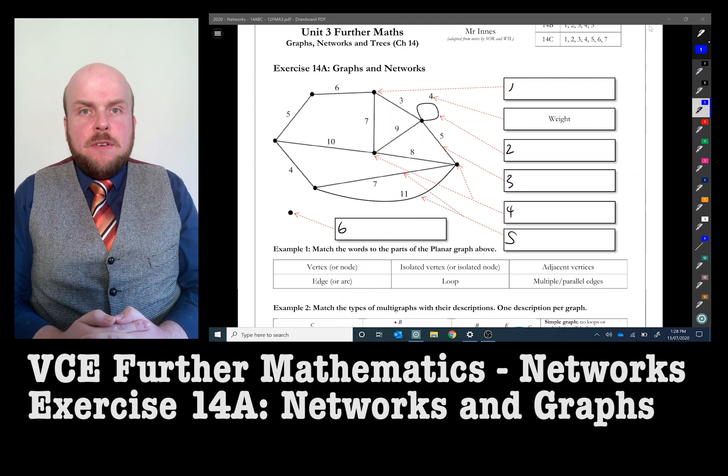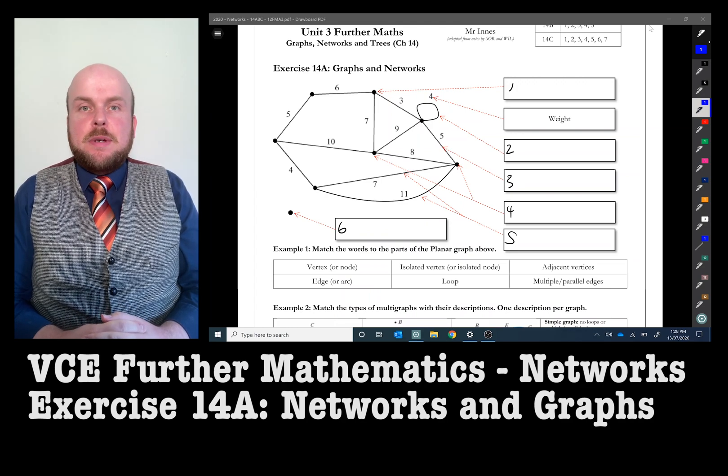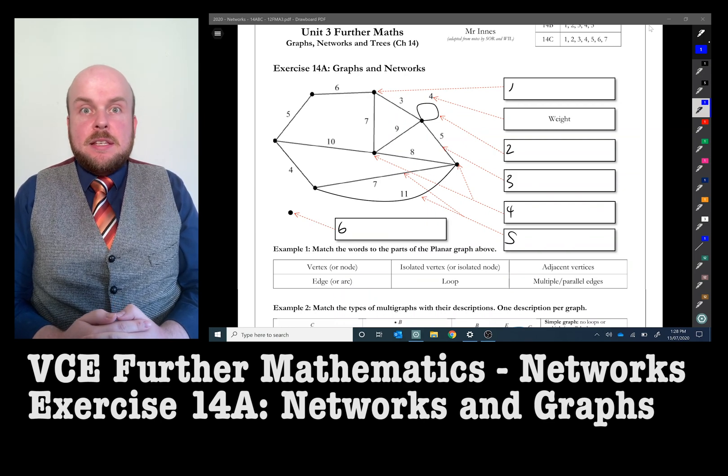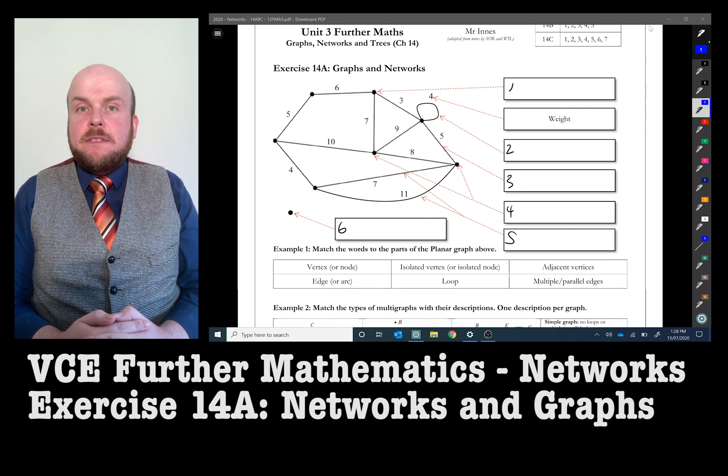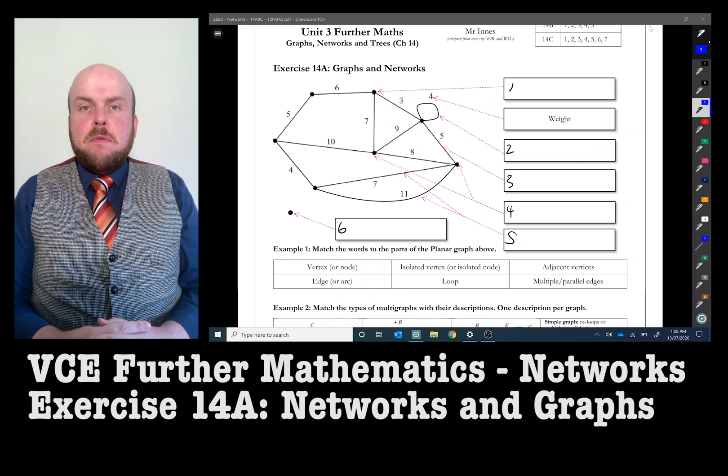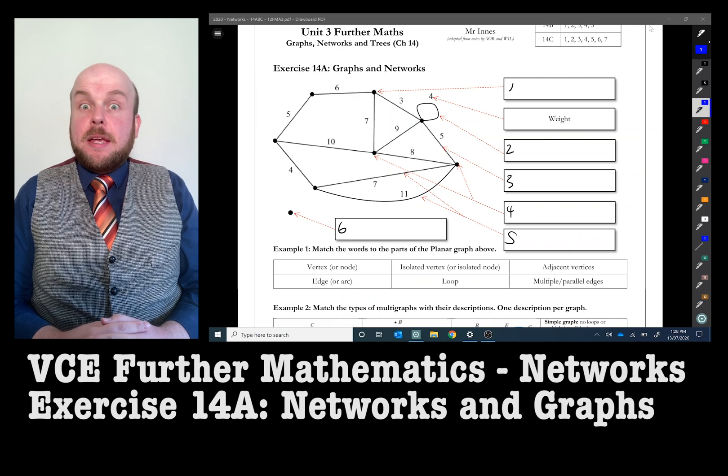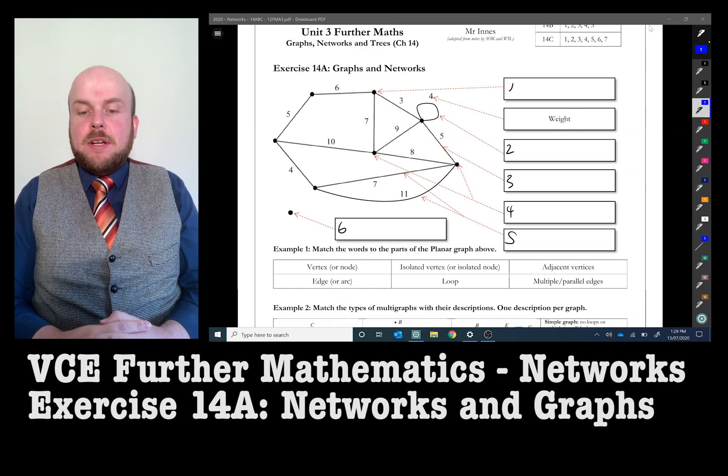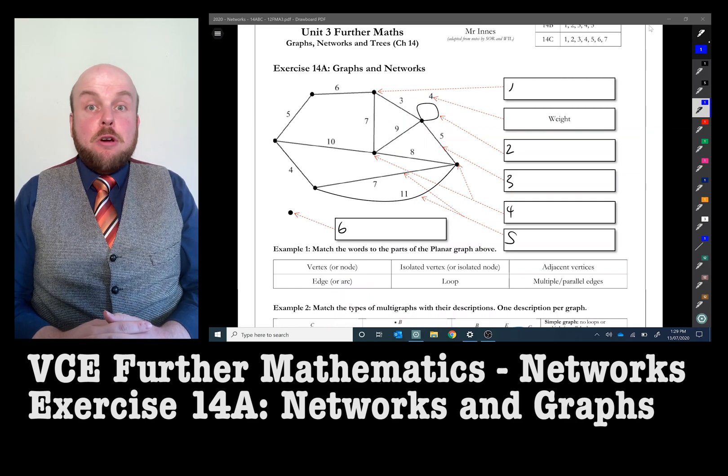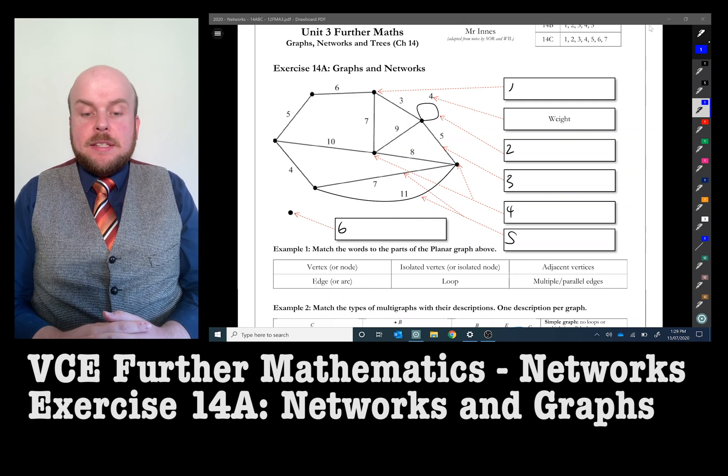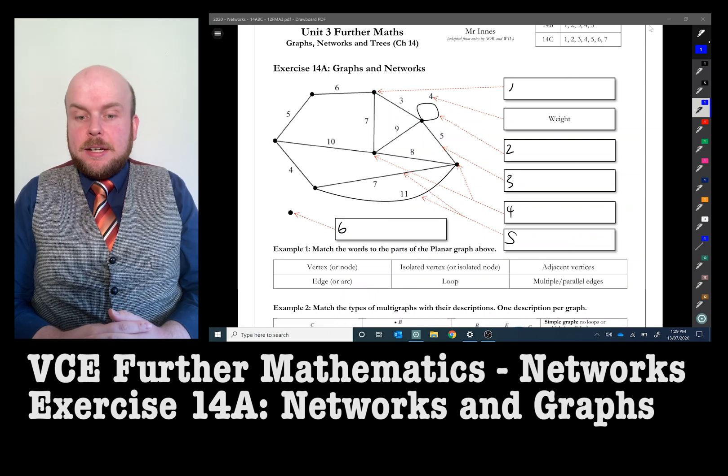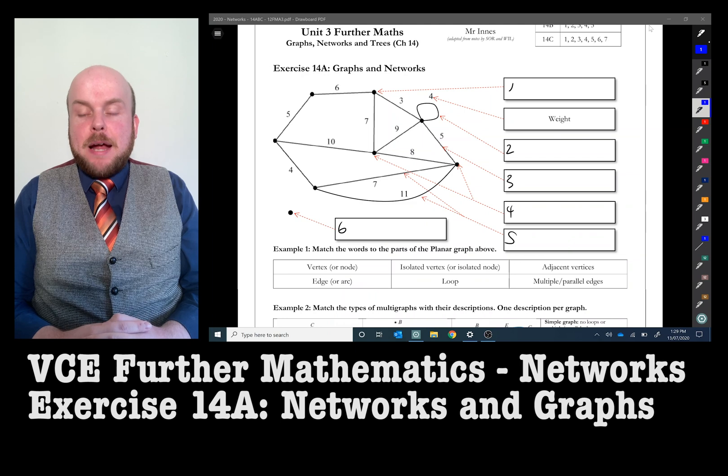It can also be used to demonstrate how you get from one point to another. Networks is a relatively new form of mathematics, only been around for within the last 100 years, and it is very useful in lots of computer programming, especially things such as Google Maps and being able to identify what is the quickest route to get from point A to point B. I have here a network graph. It is a planar network graph, and I have asked in the example to match the words to the parts of the graph above. The options are vertex or node, isolated vertex or isolated node, adjacent vertices, edge or arc, loop, and multiple or parallel edges.